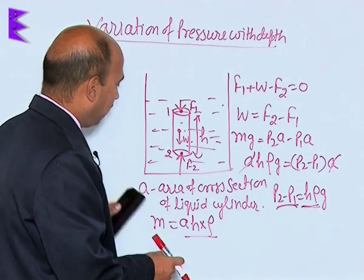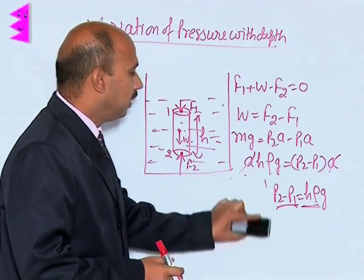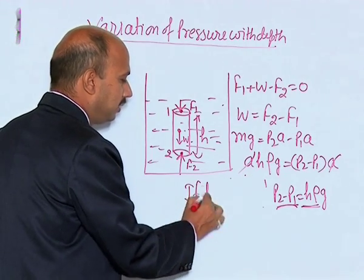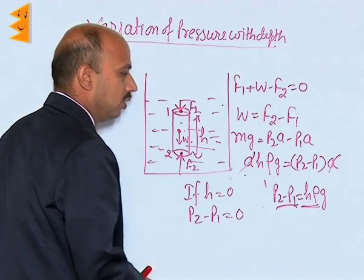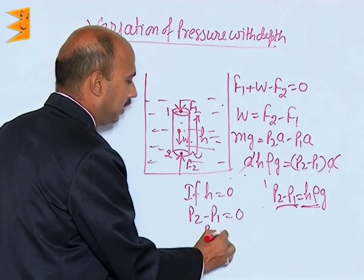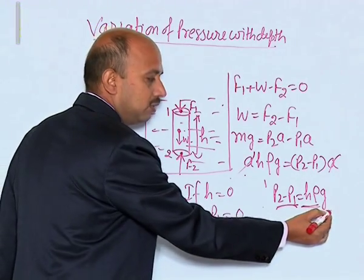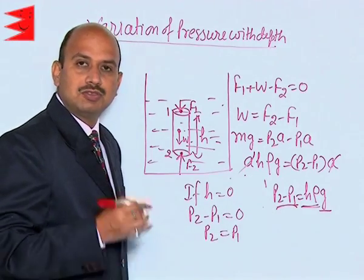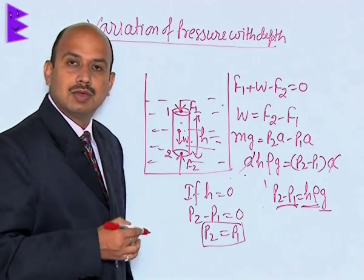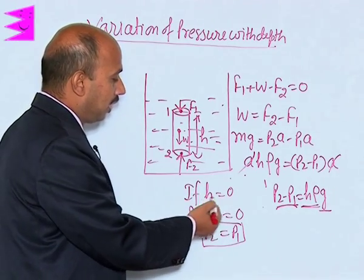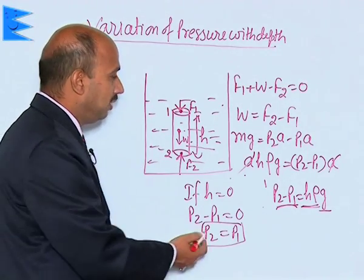Now, in this case, if H = 0, then P2 − P1 = 0, which gives P2 = P1. If H is 0, g does not make any difference here. So the pressure at two points will be the same. At the same height — that is, when the liquid column height is zero — pressure remains the same.